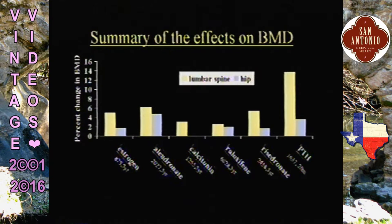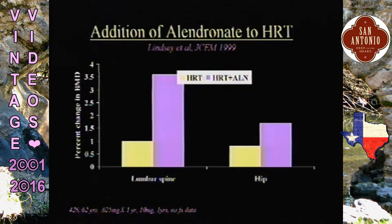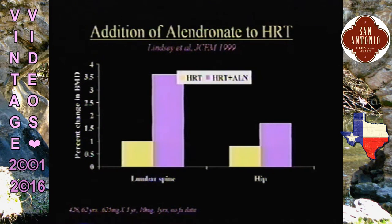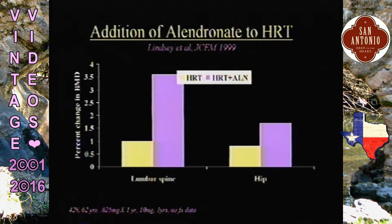This is a summary of all the effects on bone density — spine in yellow and hip in blue — comparing estrogen, alendronate, calcitonin, raloxifene, risedronate, and parathyroid hormone. What happens if you add something to existing therapy? There is a slight additional increase in bone density of around 2% if you add alendronate to hormones, but that is probably not going to be clinically significant in terms of fracture reduction. I don't think we can say two agents are better than one at this point.